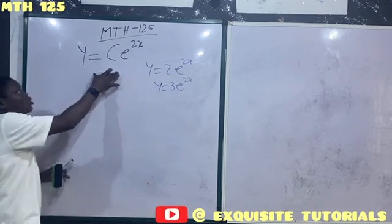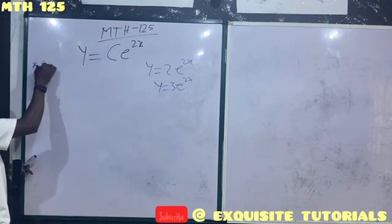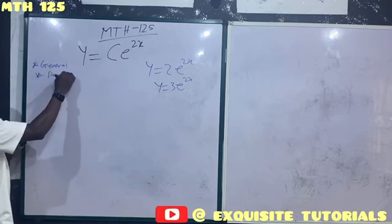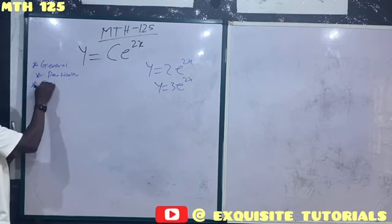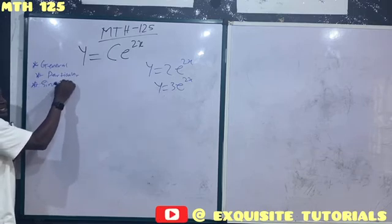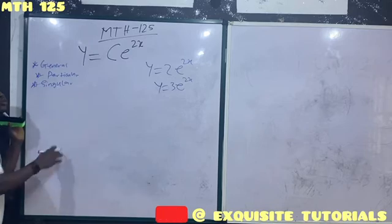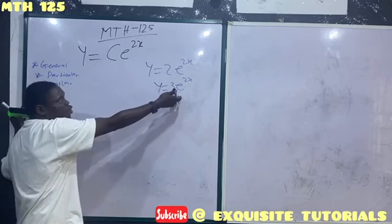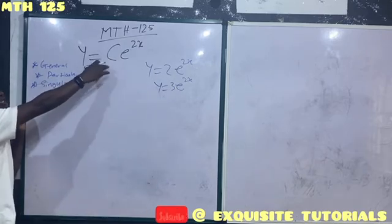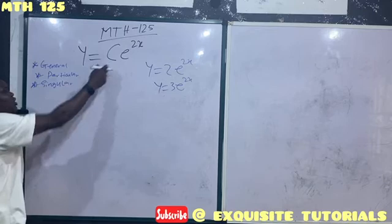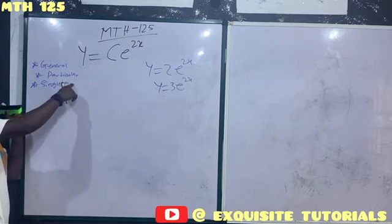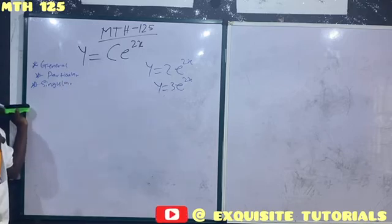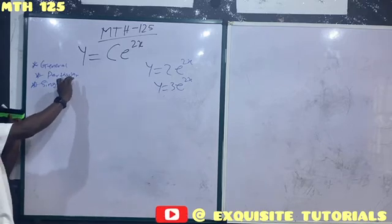This is a particular solution; this is the general solution. We have a general solution, a particular solution, and a singular solution. A singular solution is a solution in which there is only one particular solution — there is no other solution. It's a scenario whereby you have only one particular solution, and it's very rare to see such solutions.